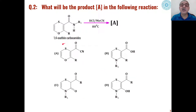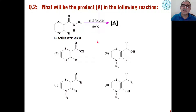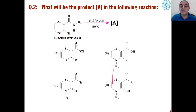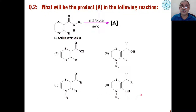The second question is in the case of 1,4-oxathine carboxamides. When these carboxamides are refluxed in acetonitrile in the presence of HCl, what is the product formed out of these four choices? Whether we get cyanides, carboxylic acids, or ketones as the product — this is to be seen: how one product is formed and by which mechanism.